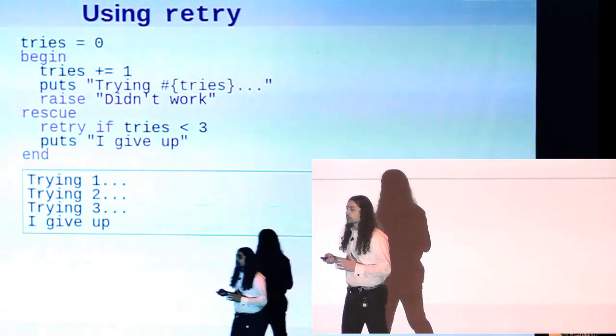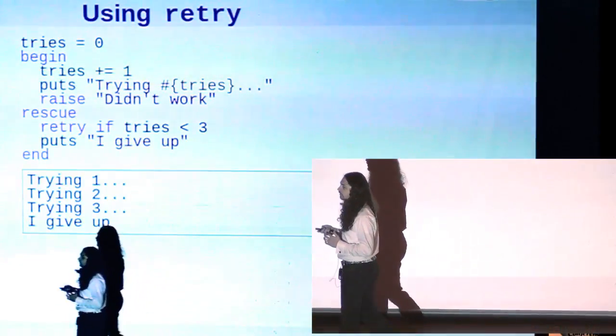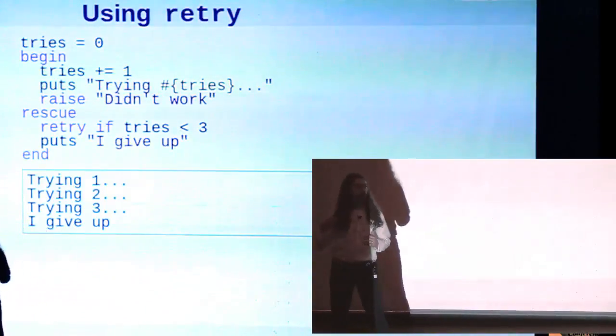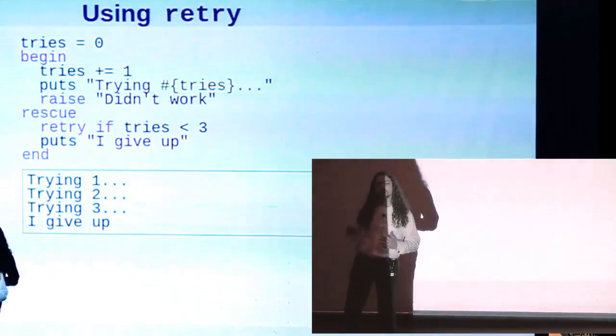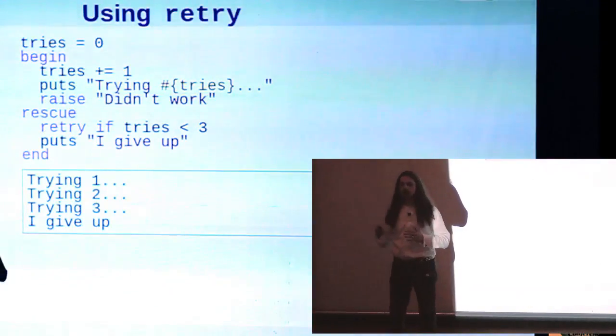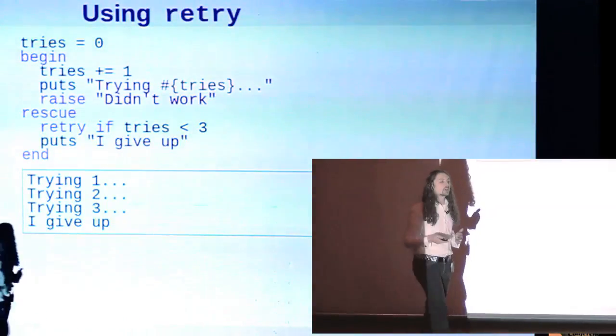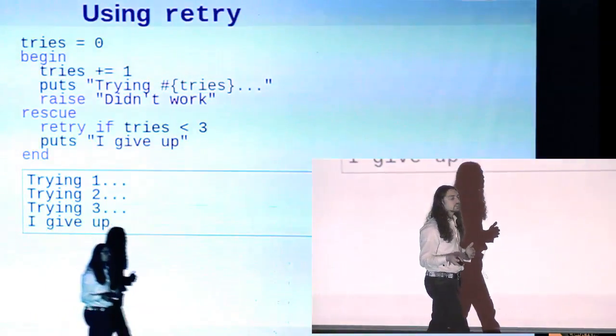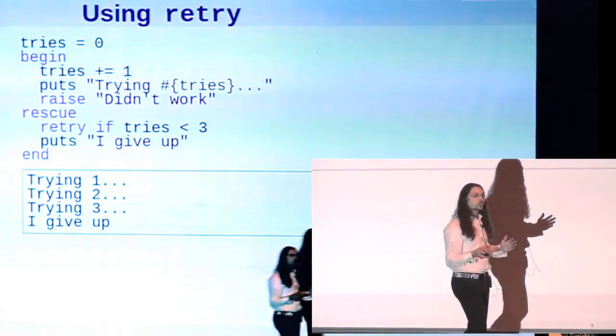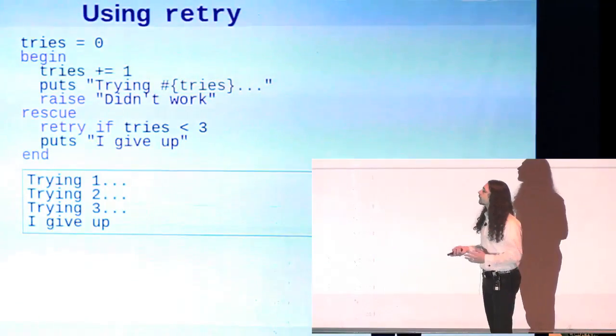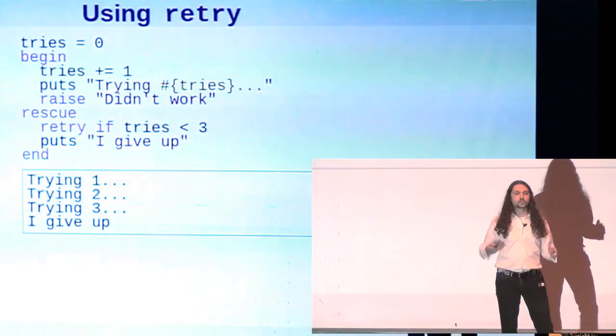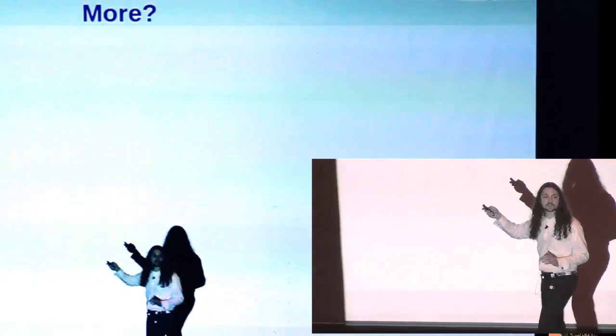Here's a version of that using retry. We're defining a tries counter, and then we're trying something out. It raises an exception, and in the rescue we check to see if we've exceeded our tries counter. If not, we say retry, and what retry does is it sends execution right back to the start of that begin block. We keep doing this until we hit our max, and then we say forget it. Has anybody not learned anything new about exceptions? Good.